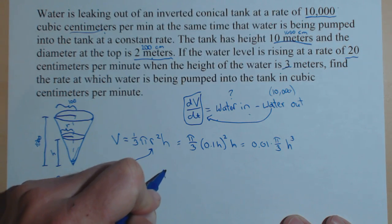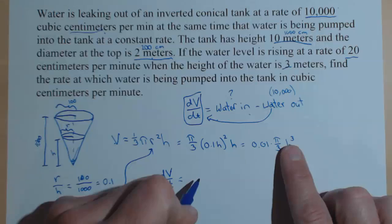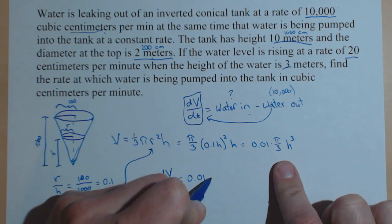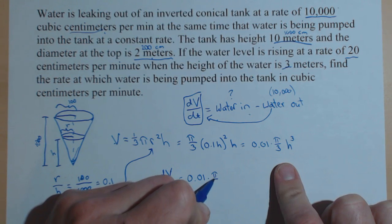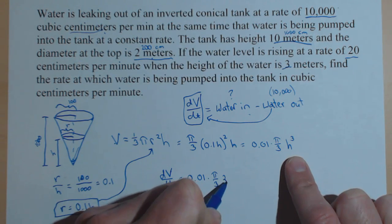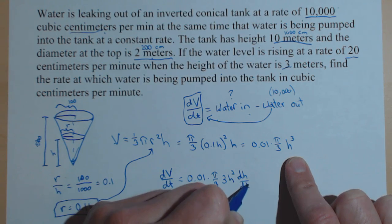So, dV/dt, the derivative of V with respect to time, is equal to. Now, I'm going to do the derivative here, 0.01 times π over 3. And now, we'll do the derivative of h. So, 3h² times dh/dt.